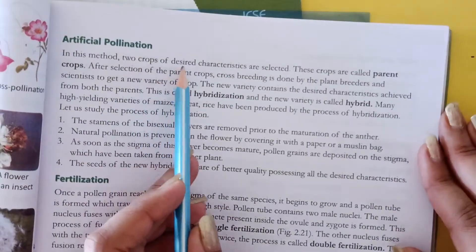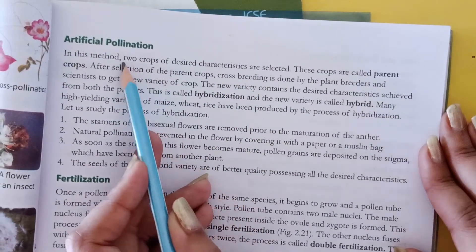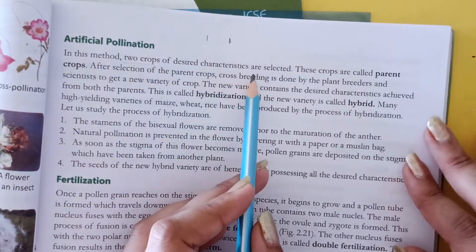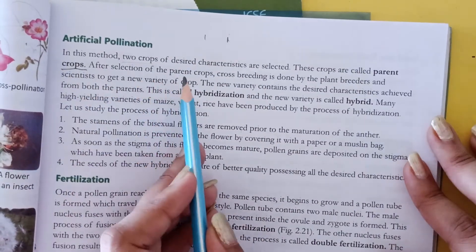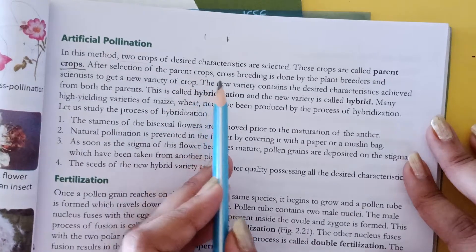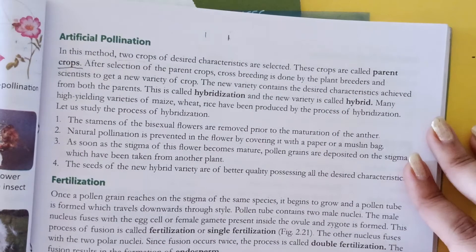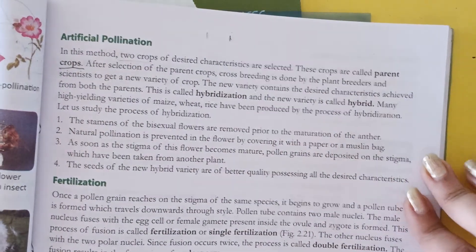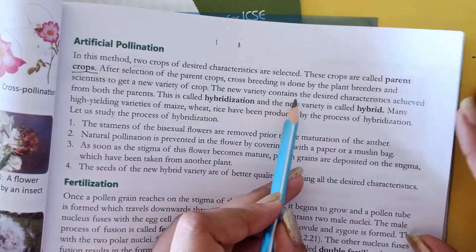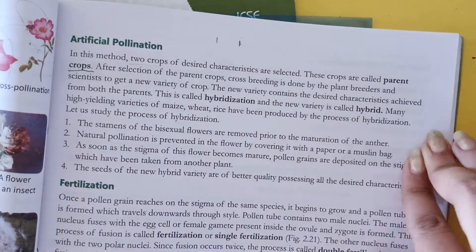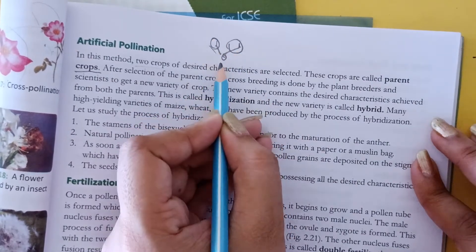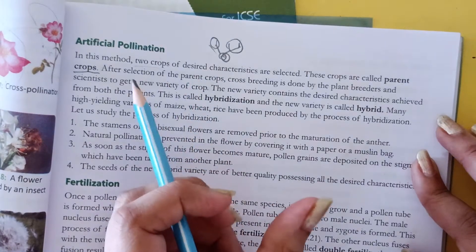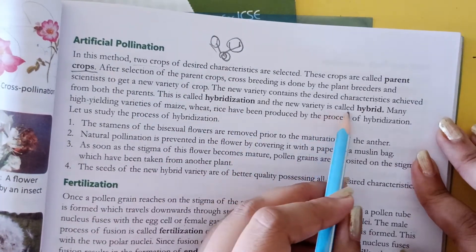Now artificial pollination kya hota hai? In this method two crops of desired characteristics select kiya humne. These crops are called parent crop. In ko hum kya bolenge, parent crop bolenge. After selection of the parent crop, parent crop ko select karne ke baad cross breeding hota hai plant breeders se aur scientists se, jo ki new variety of plant ko banane ke liye hum plant cross breeding karate hai. The new variety contains the desired characteristics achieved from both parents. Jo dono plants liye hai, ab jo new produce hoga, in dono ki breeding se, toh is ki characteristics bhi aengi, is ki characteristics bhi — dono ki characteristics se ek new product release hoga. Us ko bolte hai hybridization, aur jo new variety ko hum bolte hai hybrid.